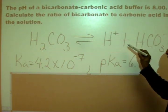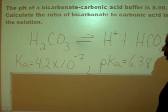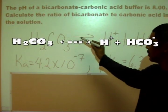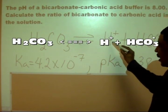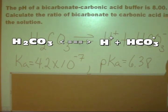Our first step in solving this particular problem is to write the equilibrium equation where carbonic acid dissolves in water and reaches equilibrium with hydrogen ion and a bicarbonate anion.